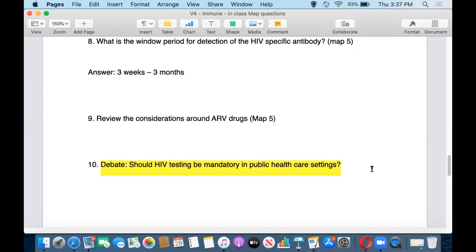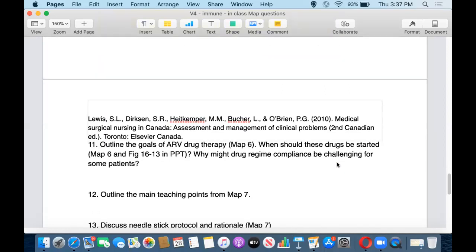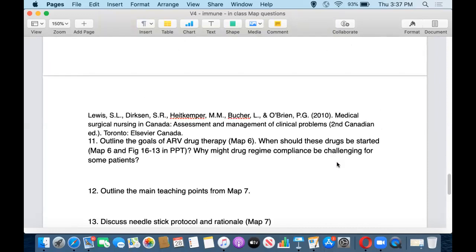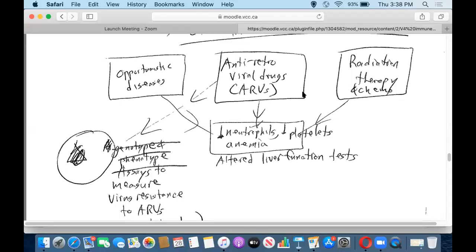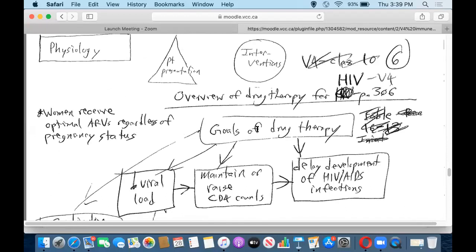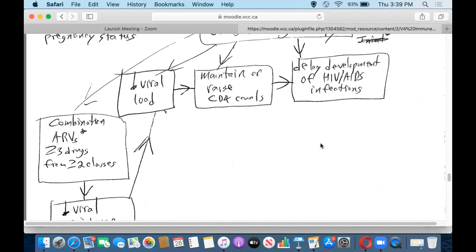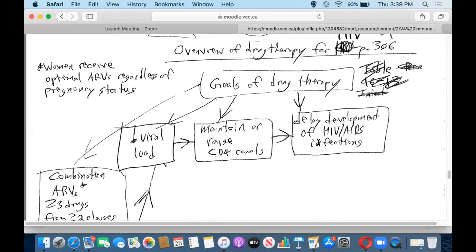Review the considerations around ARV drugs. And I think that's MAP5. It is interesting to note that antiretroviral drugs, ARVs, can cause a lowering in healthy cells like neutrophils, platelets, and red blood cells. So that would be something to monitor. The goals of ARV therapy is obviously to decrease viral load, decrease viral levels. And in many HIV patients these days, the viral levels are undetectable, which is amazing.